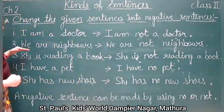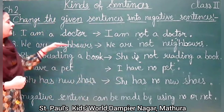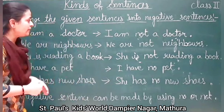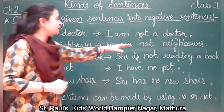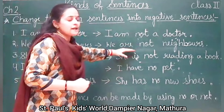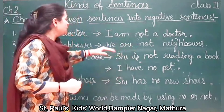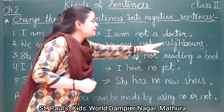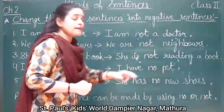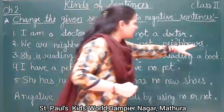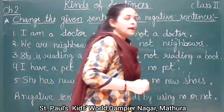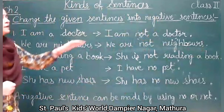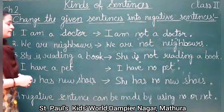The second one is 'We are neighbors.' Same in this sentence — we will add 'not' just after the verb. 'We are not neighbors.' And a full stop at the end, and the positive will become the negative sentence.